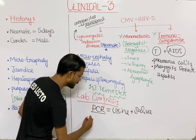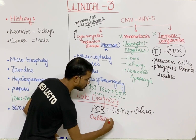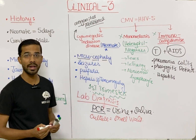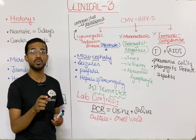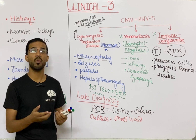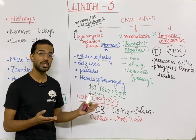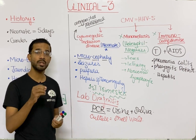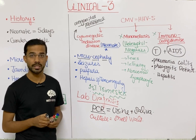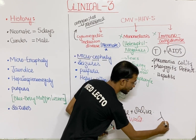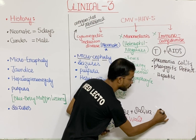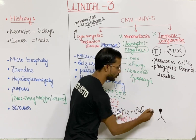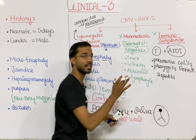Another method is culture — specifically the shell vial culture — in which the virus is cultured in cells, because viruses do not replicate independently and require host cells. After culturing, the virus is detected by adding immunofluorescence antibodies that are tagged with a fluorescent label and attach to the virus.